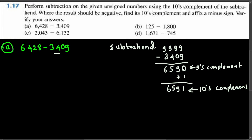Now, using the tens complement of the subtrahend, where the result should be negative, this result represents a negative number. So if we add the tens complement to the minuend, that should give the same answer as subtracting. The question says to affix a minus sign and verify the answer. First, we are going to add them, then get the result, and then do the verification.